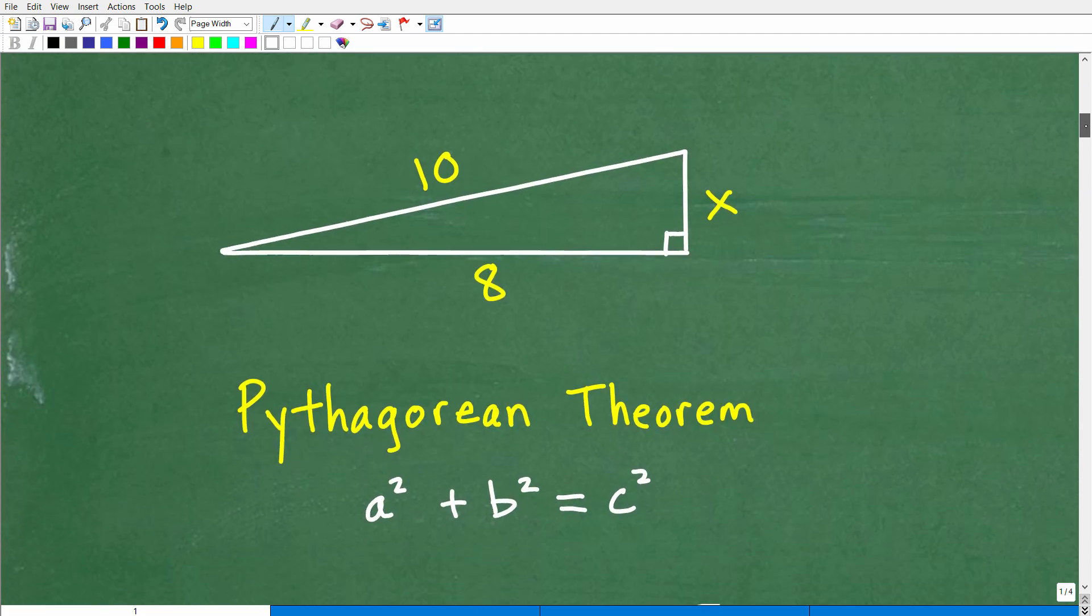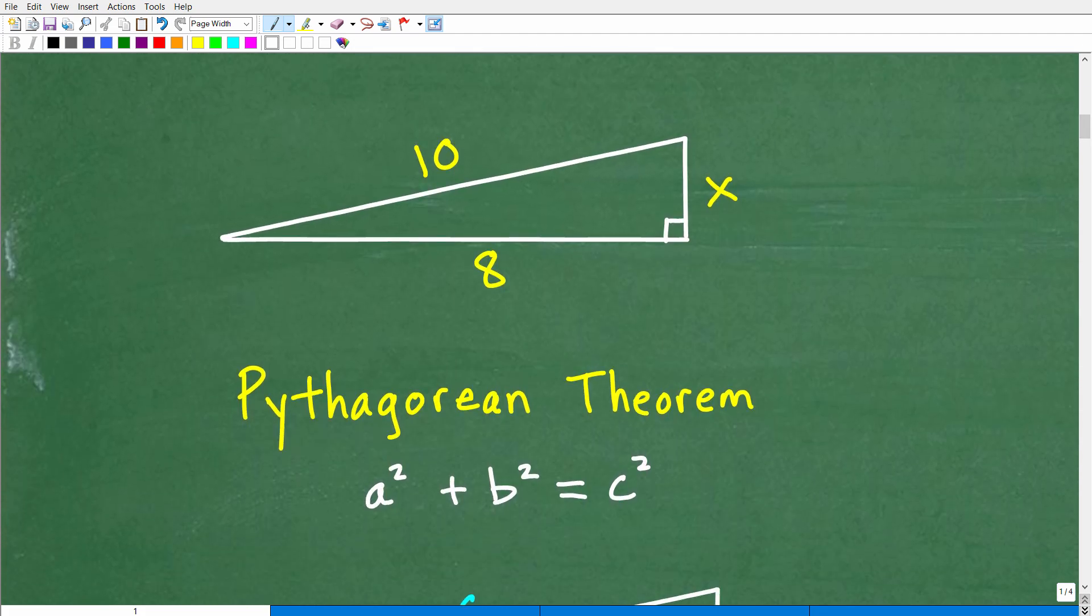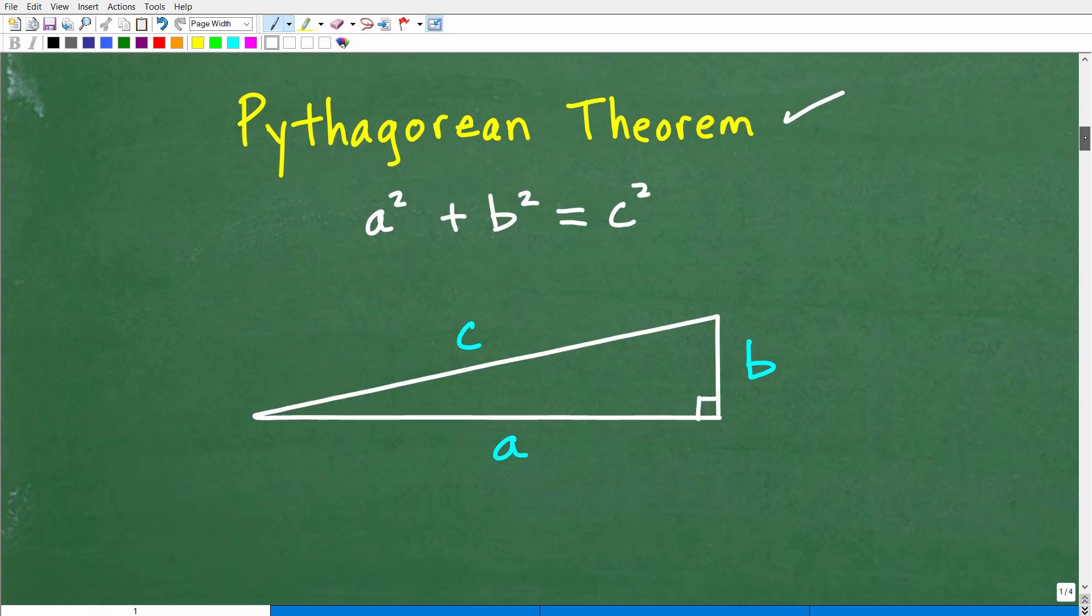Okay. So again, here is our problem. We recognize, oh, this is a right triangle. I'm trying to find a side, a missing side in a right triangle. Automatically, you should be thinking Pythagorean theorem. And that is a squared plus b squared is equal to c squared. But what does that mean? Well, let's go ahead and take a look at that now.